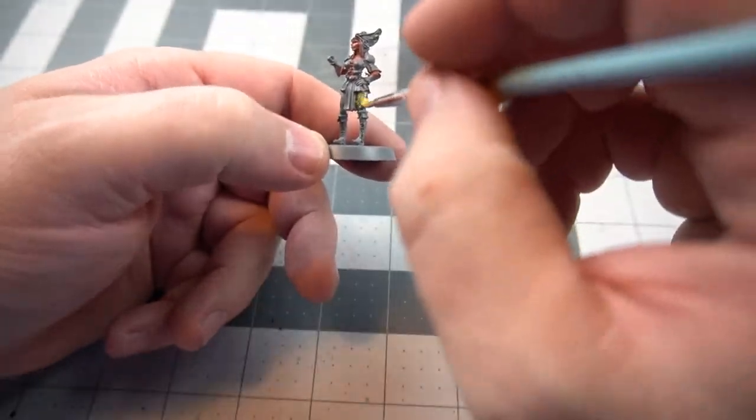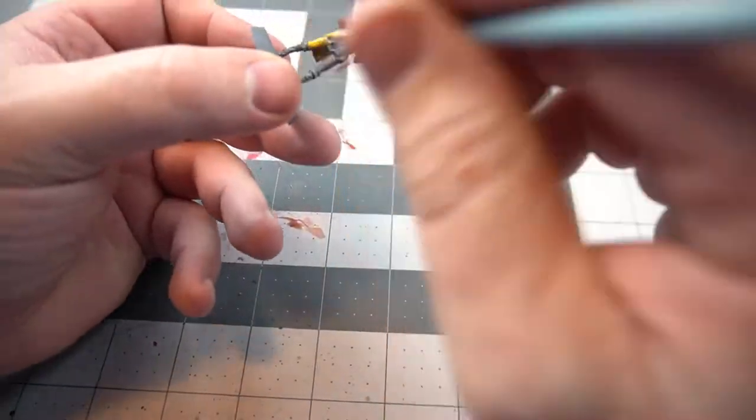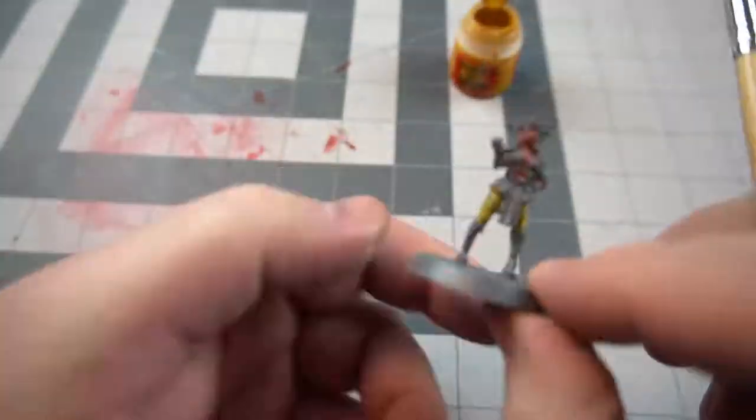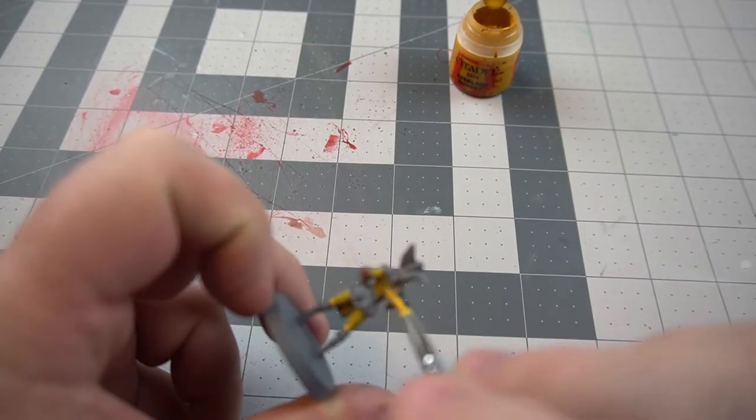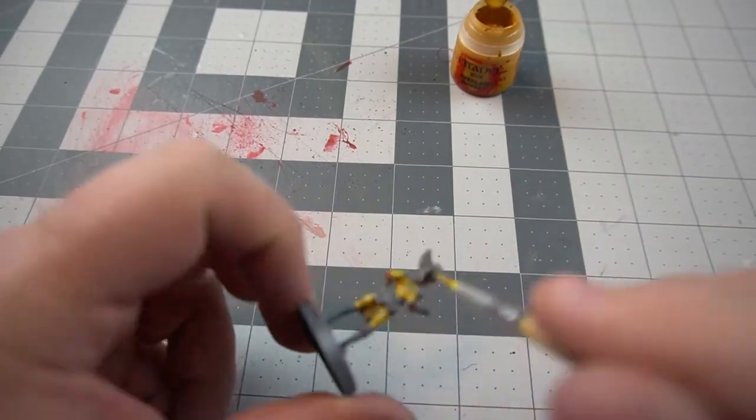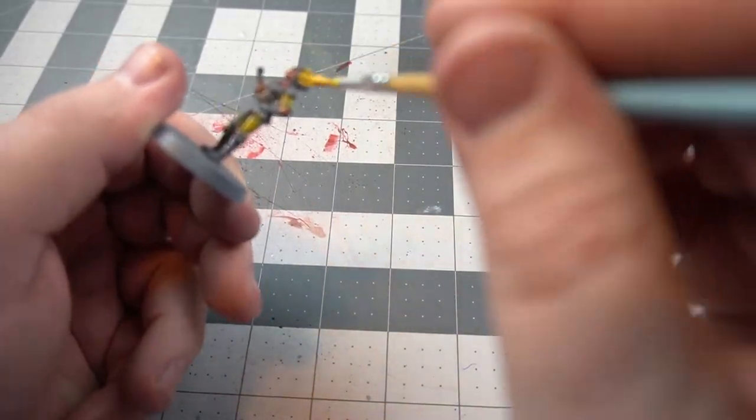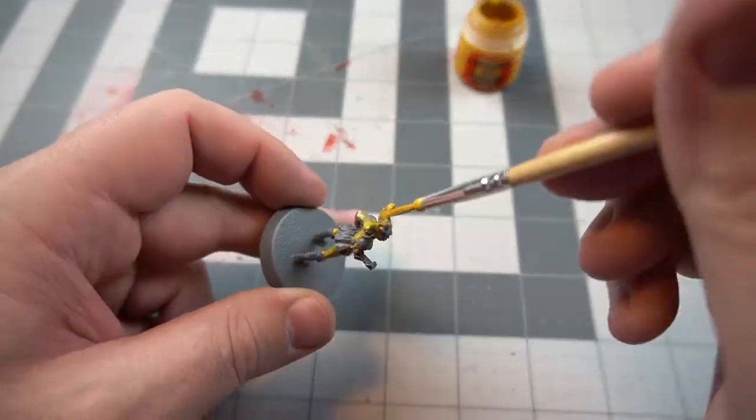Then I'm going to go on to painting the yellow of the uniform. I'm starting with a mustard yellow. I'm going to go up to a brighter yellow later, starting with the pants and then moving into the shirt or the under tunic and things like that.